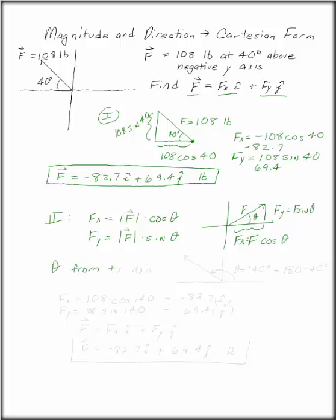So the formulas are all well and good as long as you know that in our case, with F in the second quadrant, theta has to be 140 degrees, 90 plus 50 or 180 minus 40.